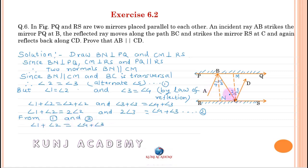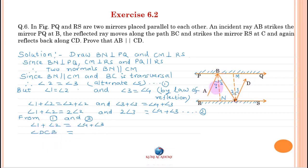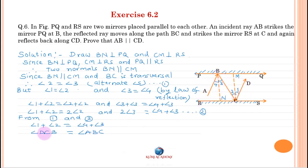Angle 1 plus angle 2 can be written as angle DCB, and angle 4 plus angle 3 can be written as angle ABC. These two angles — angle DCB and angle ABC — are alternate angles, therefore AB is parallel to CD.